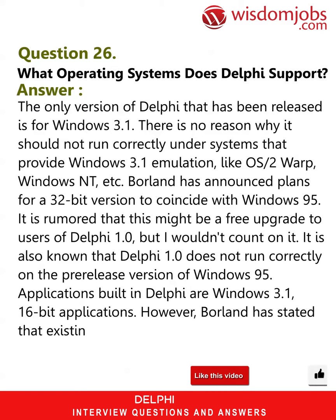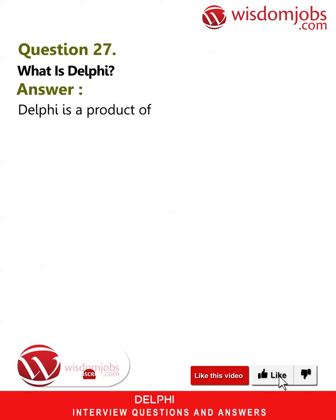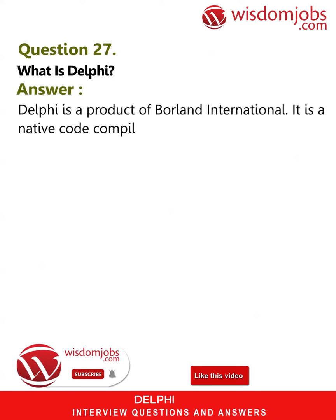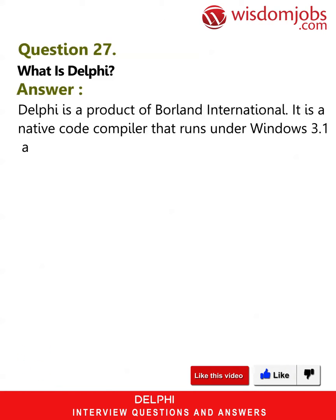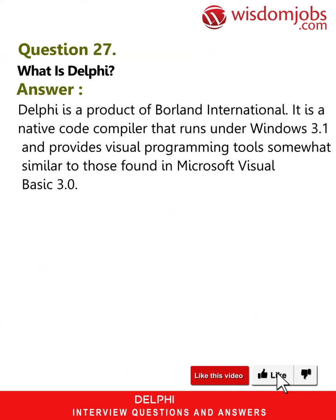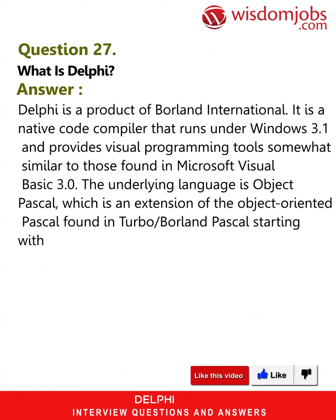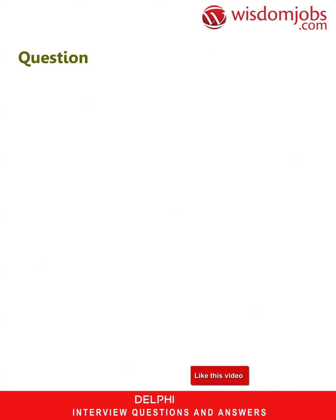It is also known that Delphi 1.0 does not run correctly on the pre-release version of Windows 95. Applications built in Delphi are Windows 3.1 16-bit applications; however, Borland has stated that existing Delphi applications will compile unmodified in 32-bit Delphi. Question 27: What is Delphi? Answer: Delphi is a product of Borland International — a native code compiler running under Windows 3.1 that provides visual programming tools similar to Microsoft Visual Basic 3.0. The underlying language is Object Pascal, an extension of the object-oriented Pascal found in Turbo/Borland Pascal starting with version 5.5.